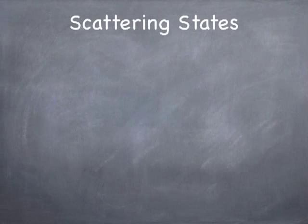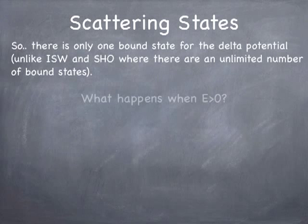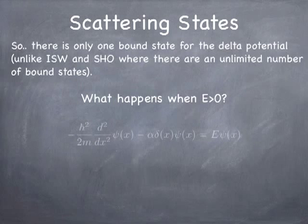First of all, I want to point out that for the delta function potential, there was only one bound state, unlike the infinite square well and simple harmonic oscillator, where there were an infinite number of states. But what happens to the delta function potential when you let the energy become greater than zero?